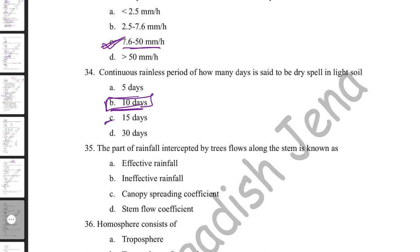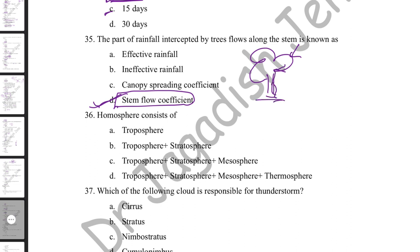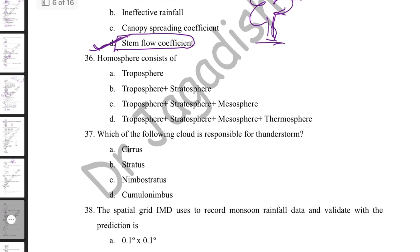The part of total rainfall intercepted by trees that flows along the stem is known as the stem flow coefficient. Broadly, the atmosphere is divided into homosphere and heterosphere. The homosphere consists of the troposphere, stratosphere, and mesosphere.